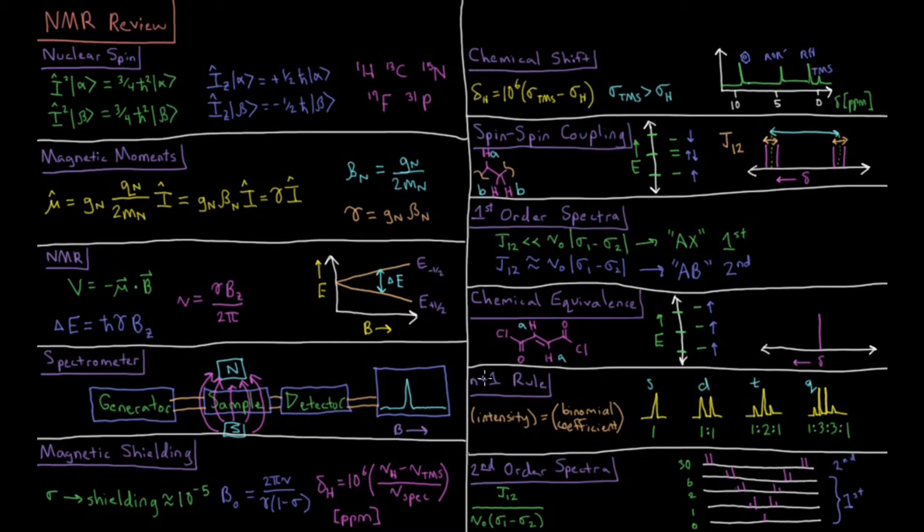We get to the N plus 1 rule, where the intensity of a split peak next to another given proton basically ends up being a binomial coefficient. For example, where we have this hydrogen next to two protons that are equivalent, that would end up being what's called a doublet, where we have the ratio of the peaks integrated would be 1 to 1. For singlets, there's just 1. For something next to two equivalent protons, we have two equivalent protons here, so N plus 1 is 3. That would be a triplet, which has three peaks of ratio 1 to 2 to 1. Quartets next to three equivalent protons, like a methyl group, would be 1 to 3 to 3 to 1. And then a quintet would be 1 to 4 to 6 to 4 to 1, whatever the binomial coefficient is for that number of equivalent protons plus 1.